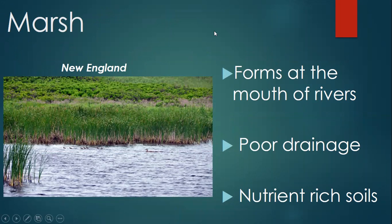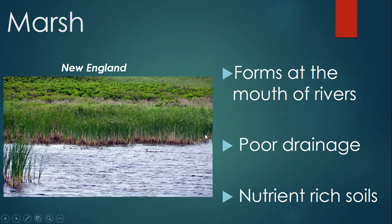Marshes can be two types: saltwater or saline, and freshwater. This photograph is from New England — a saline marsh; if you went to the side you'd see the Atlantic Ocean. Marshes tend to form at the mouths of rivers, in areas with poor drainage, and they have the most nutrient-rich soil of any of the three types of wetlands.